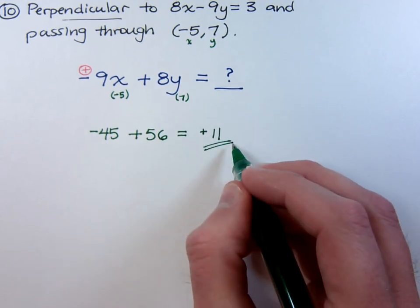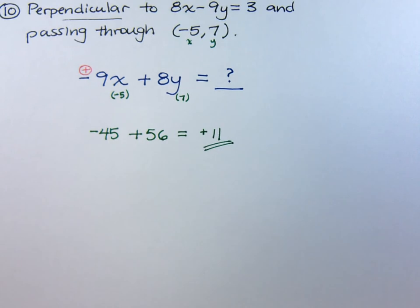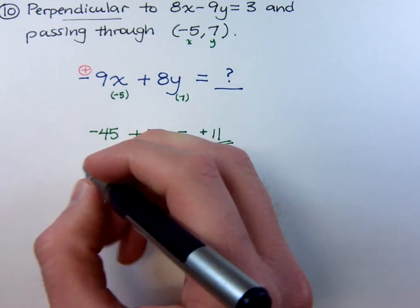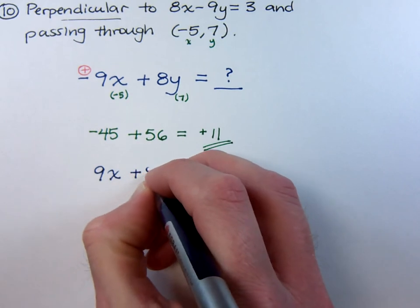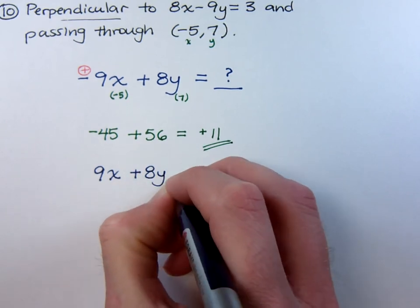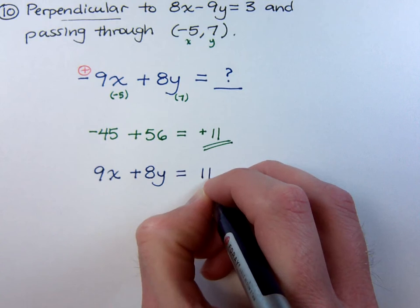So using this guy and knowing what my form is supposed to be, I can easily write my equation 9x plus 8y equals 11.